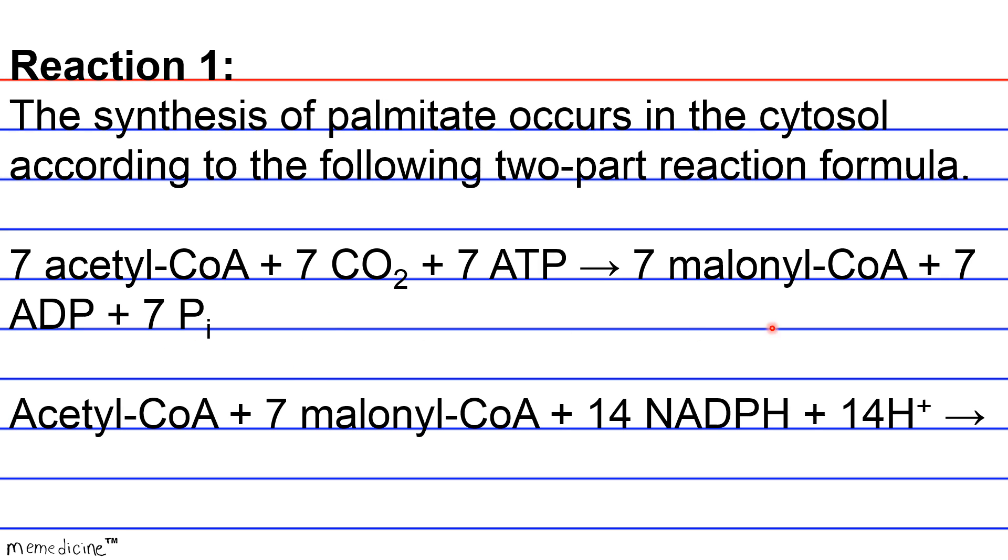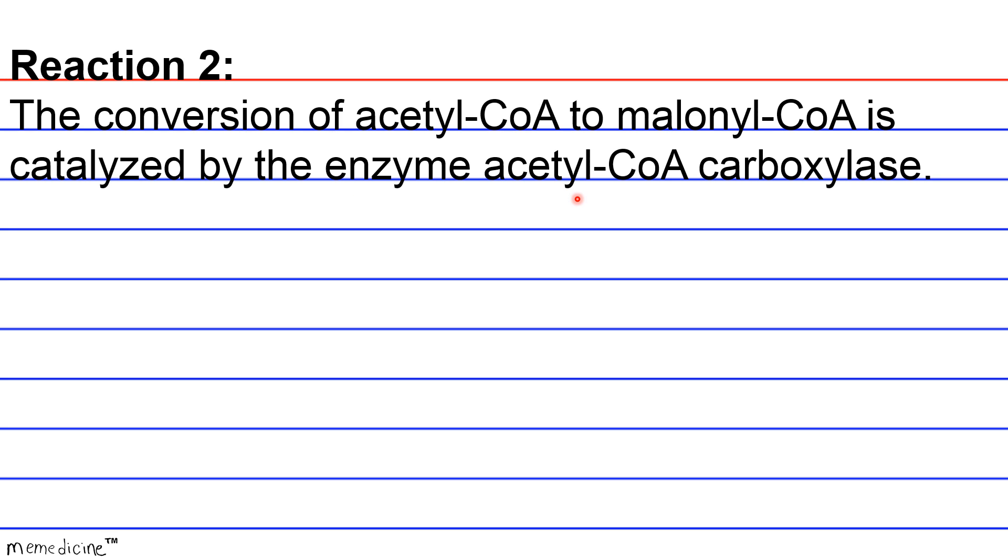Next, you take these 7 malonyl-CoA that you yielded, you add 1 acetyl-CoA and 14 reducing NADPH plus 14 hydrogen ions. So this is like in acidic conditions. And then you're going to yield palmitate, which is our fatty acid, plus 7 carbon dioxide, plus 8 CoA's, plus 7 NADP pluses—this is the oxidized form—and 6 waters. Reaction 2: Before we get into Reaction 2, I want you to note that the conversion of acetyl-CoA to malonyl-CoA, just shown in Reaction 1, is catalyzed by the enzyme acetyl-CoA carboxylase.